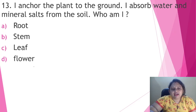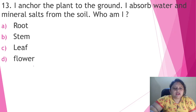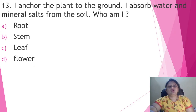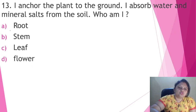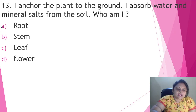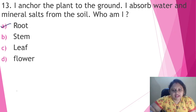I anchor the plant to the ground. I absorb water and mineral salts from the soil. Who am I? We know very well — what is anchored to the soil and absorbs water and minerals from the soil? That is the root. So the correct answer is option A, that is root.